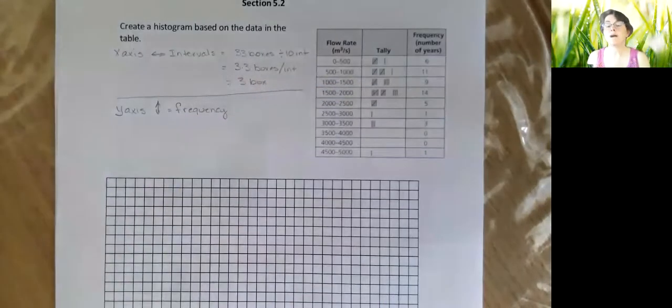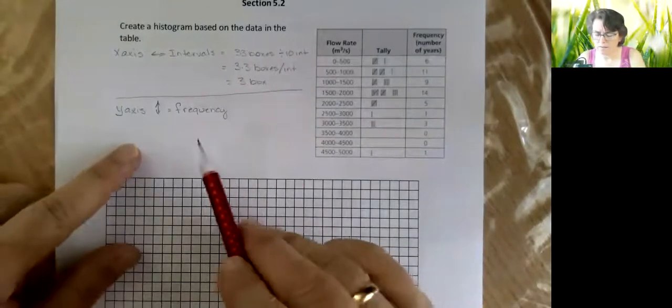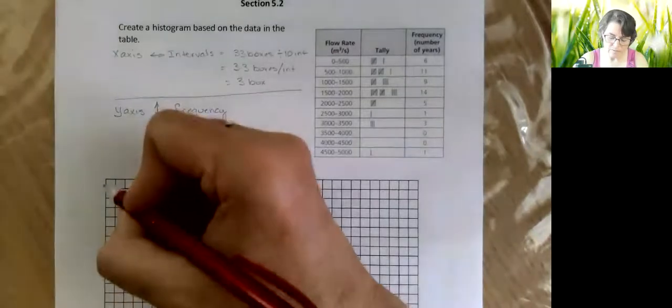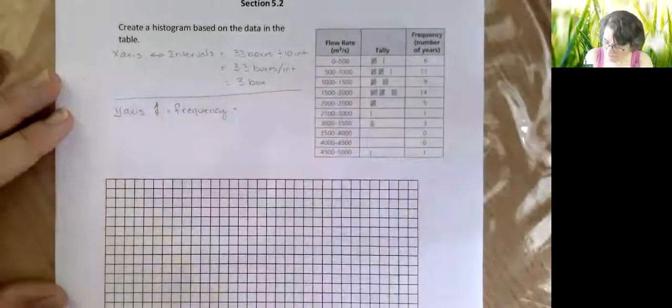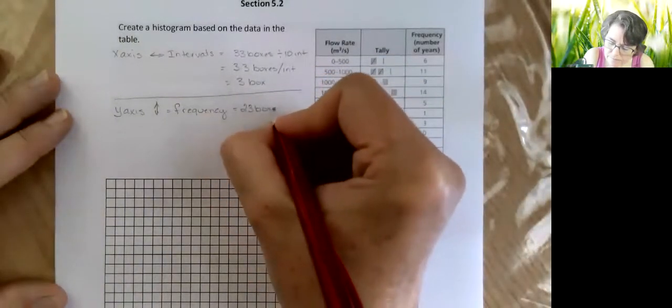And this is going to measure how often that amount of flow rate hit. That's a really awkward way to say but you know what I mean. So if we look through our frequency, we see that the highest number is 14, so I need to go up to 14 at that point. And I did count, there's 23 boxes and my highest is 14.